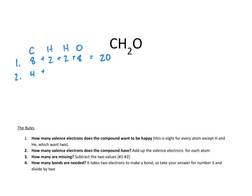Step three: how many am I missing? 20 is what I'd like to have, minus the 12 that I have, so I am missing eight electrons. Step four: in order to get those eight electrons, I take eight divided by two, so I need four bonds — which means I need to draw four lines.